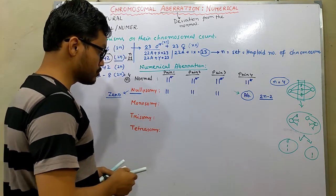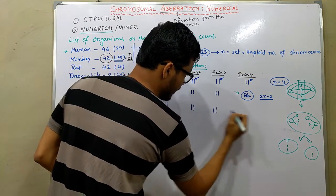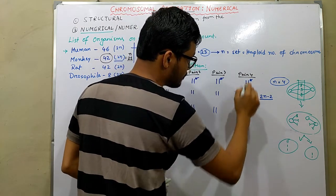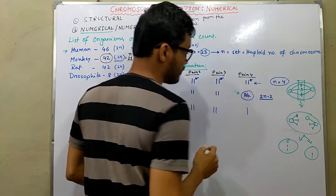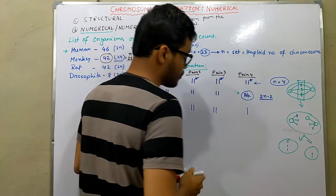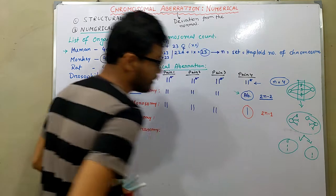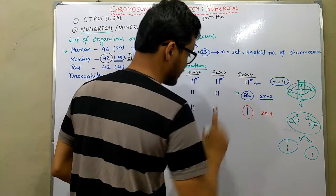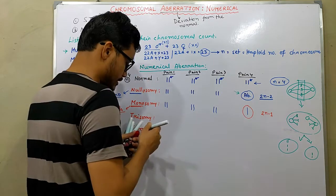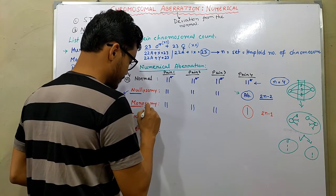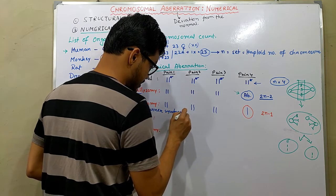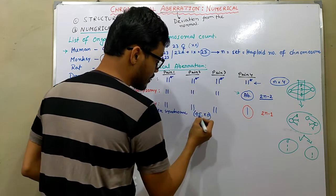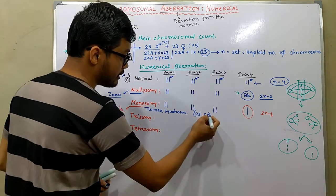In the case of monosomy, it stands for a single chromosome being absent from a pair of chromosomes. You observe that one pair has only one chromosome when it should have two. This is defined as 2n minus 1. Mono stands for single, so a single chromosome is absent. An example of monosomy is Turner syndrome, where the karyotype is 45XO — meaning the total chromosome number is 45 and one X chromosome is missing.